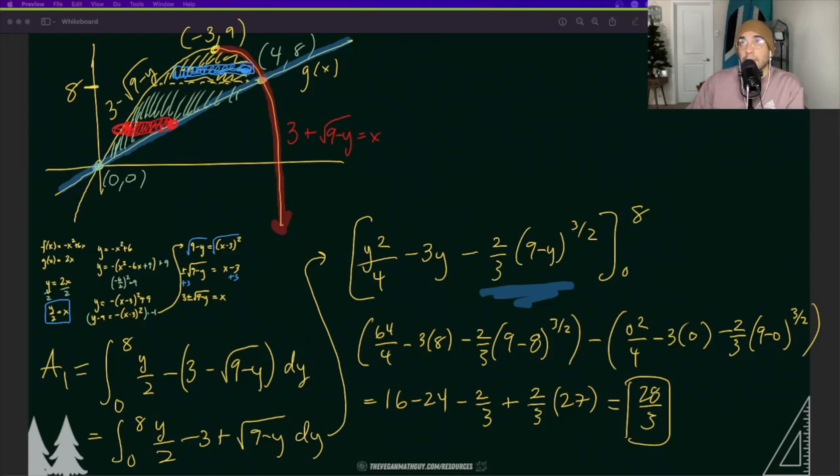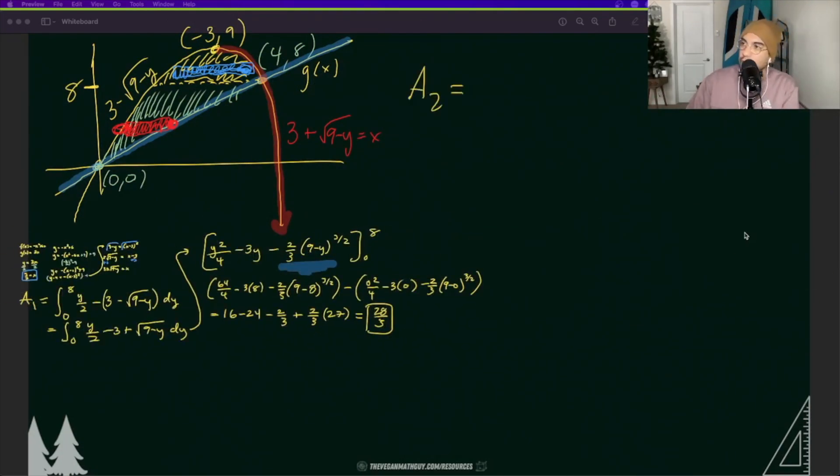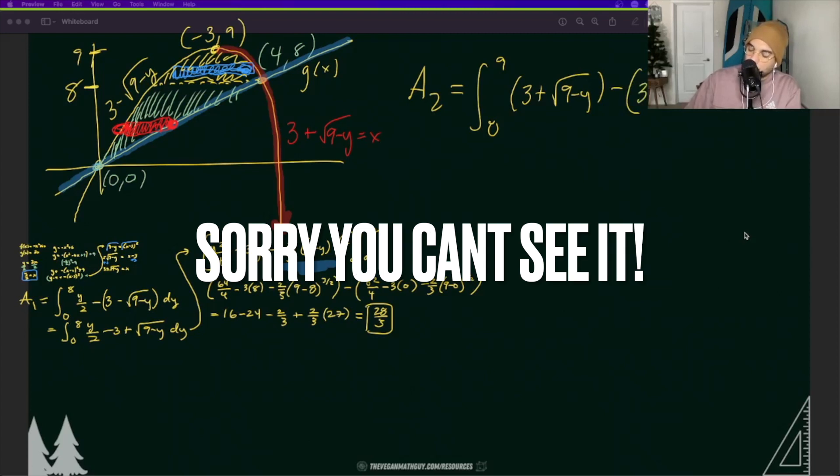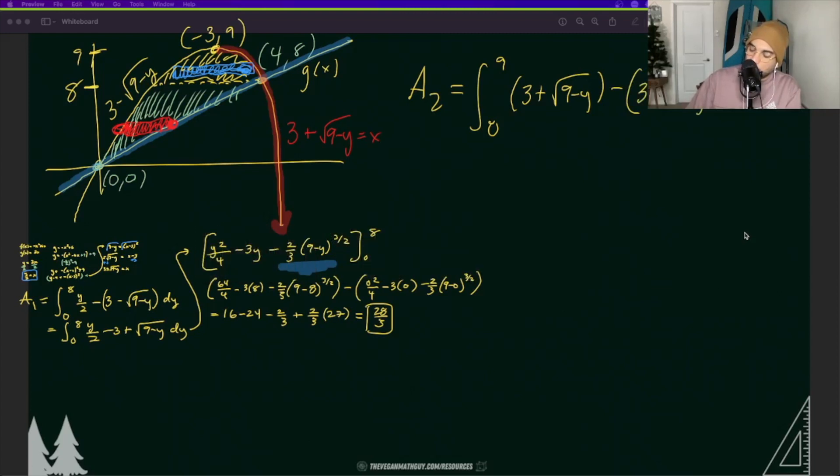It looks like I need to continue creating some space on the blackboard here. Area two is going to be bounded from eight to nine. Again how did I find that? We know that it's going to be eight because that's where it started. That's where the first integral ended and it's going to be nine because that is the top of the vertex. That is the maximum and this is going to be the right side of the quadratic in terms of y and that's 3 + √(9-y) minus the left side of the quadratic in terms of y. So 3 - √(9-y). That simplifies quite nicely.